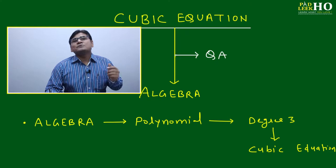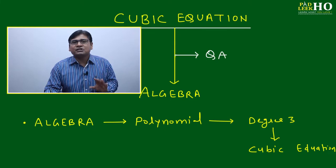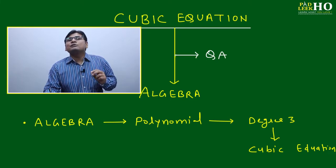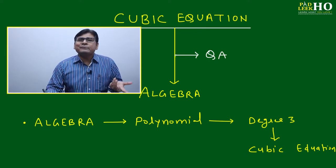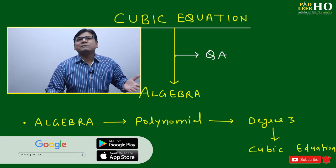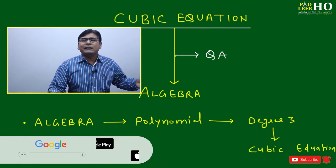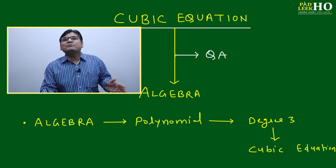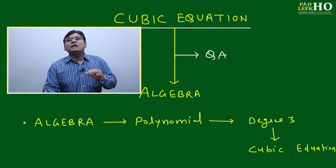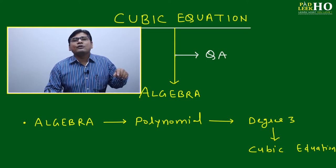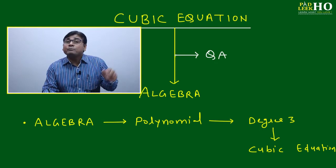One thing is certain: the number of roots is fixed because we are dealing only with cubic equations. A cubic equation means degree equal to 3, so the number of roots will be 3 — it cannot be less, it cannot be more. Many possibilities exist: maybe two roots are equal, maybe one root is zero, or maybe one root is real and two are imaginary. But the total number of roots will always be 3.